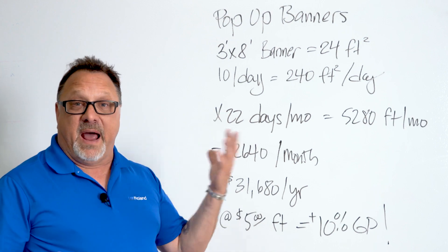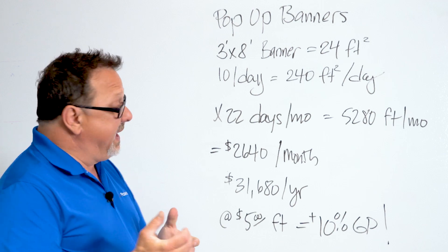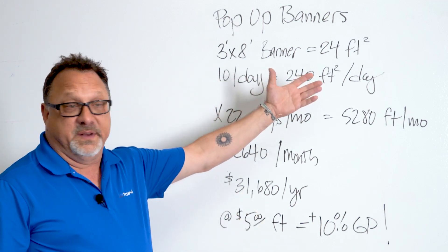So a pop-up banner on average is 3 foot by 8 foot, which is going to be 24 square feet per banner. If I'm a shop that does 10 of those a day, it's 240 square feet a day.